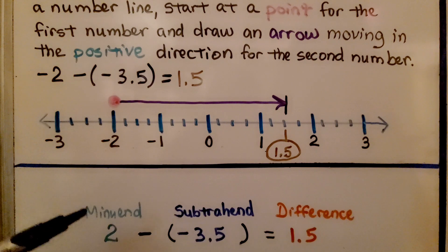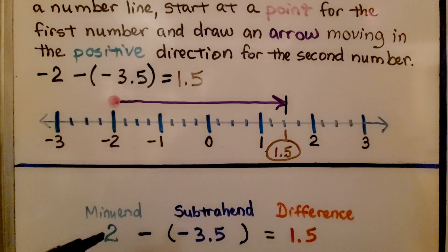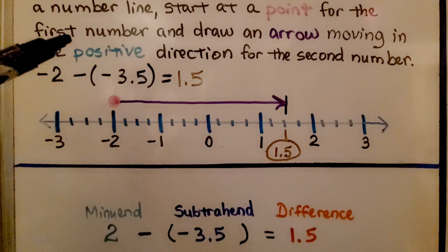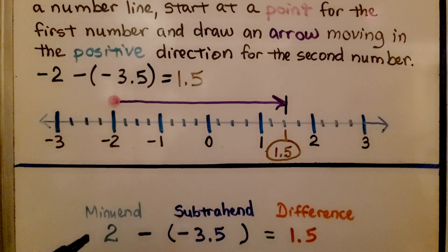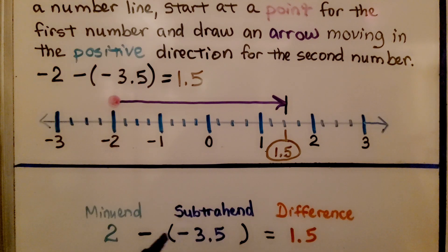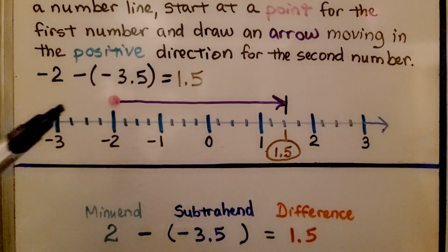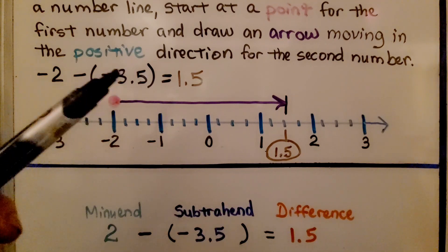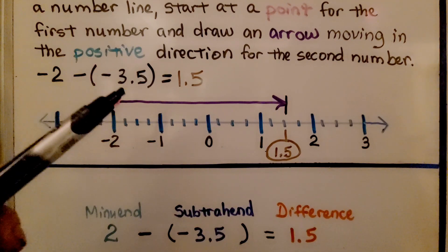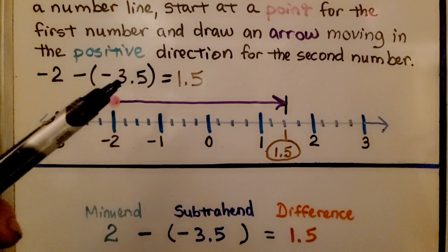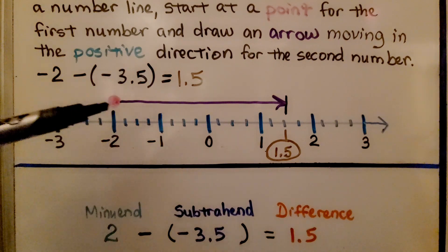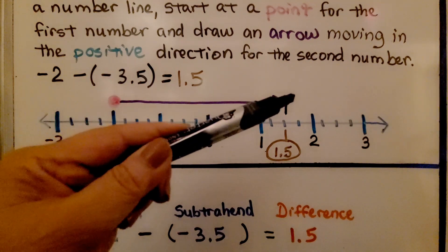So remember, the first number — the one we draw the point at — is the minuend. The second number is called the subtrahend in a subtraction problem, and of course the answer is the difference. So we have a minuend and a subtrahend. If this subtrahend is negative, we're going to move in a positive direction.